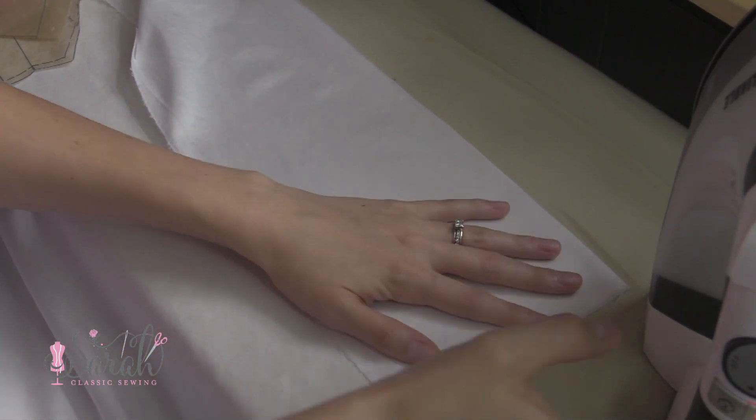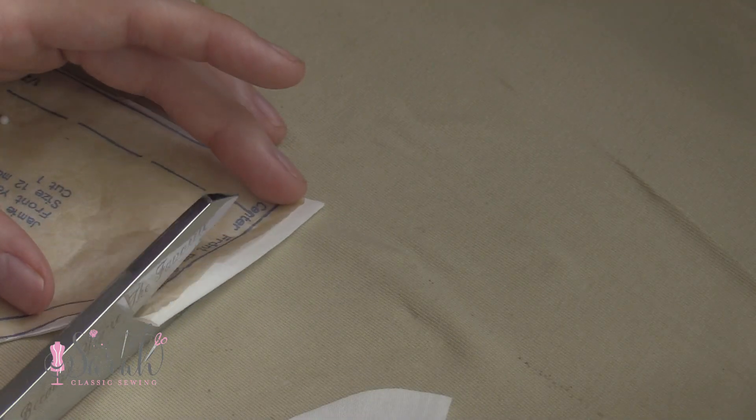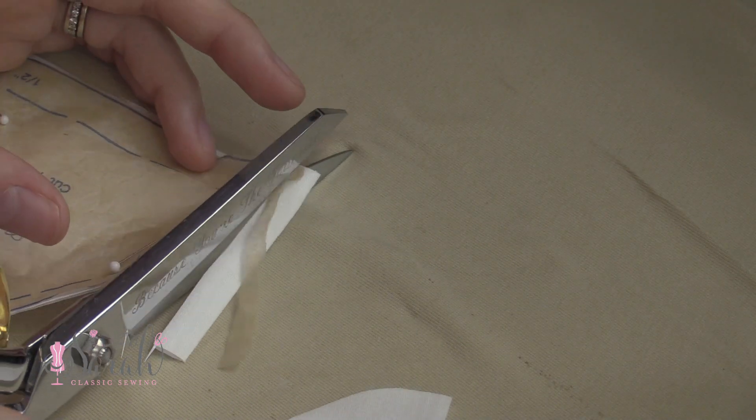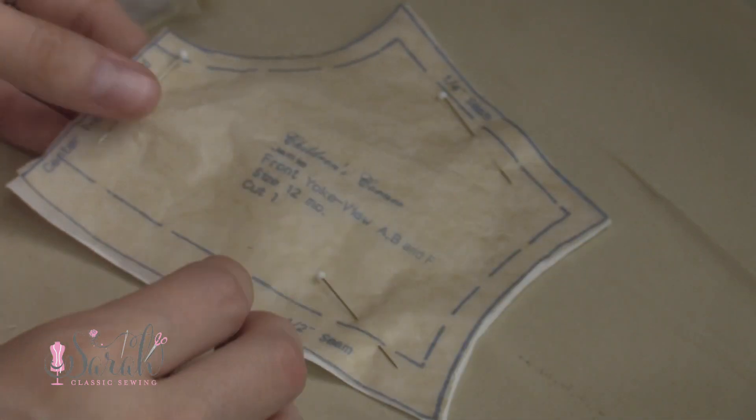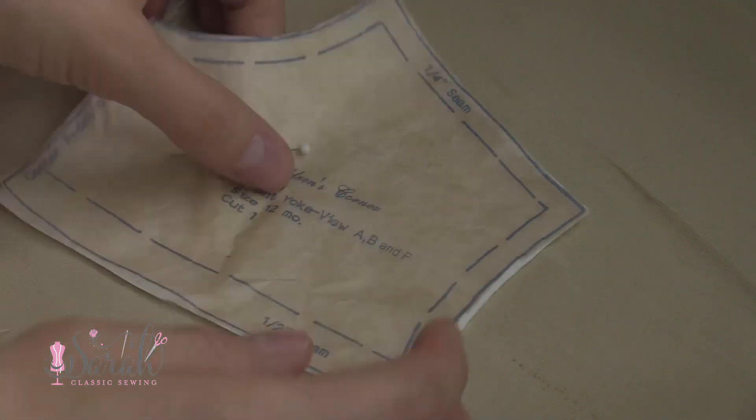Then I start cutting out my pieces. When I cut the yoke front piece, I'm going to cut all the way around that pattern piece, so it's not going to be cut on the fold. Remember, I'm just using this pattern as a starting off point. So I'm going to cut out four pieces total, two for the garment and two for the lining.